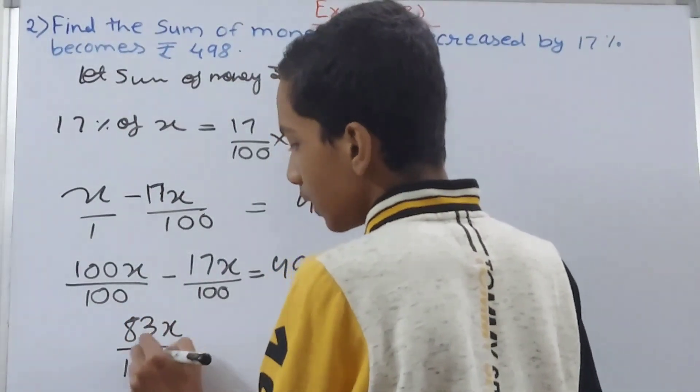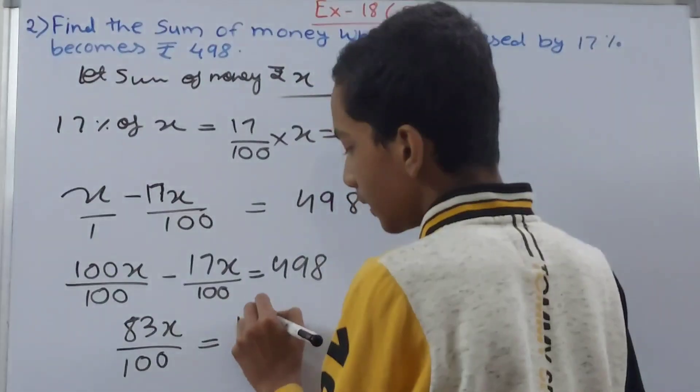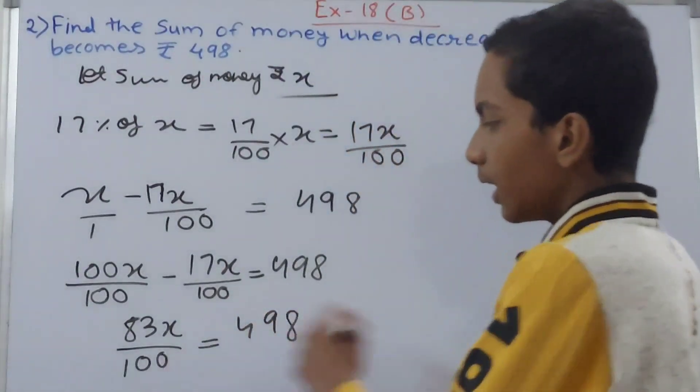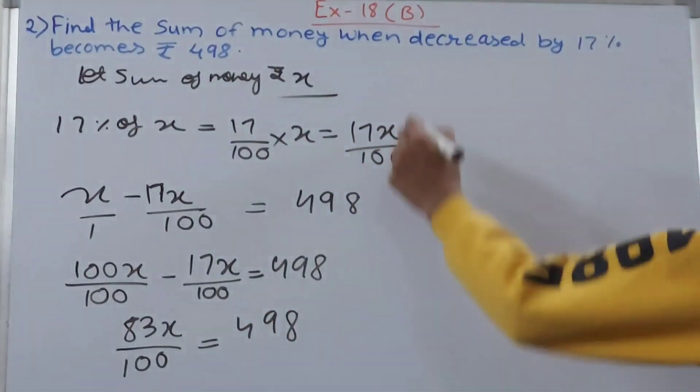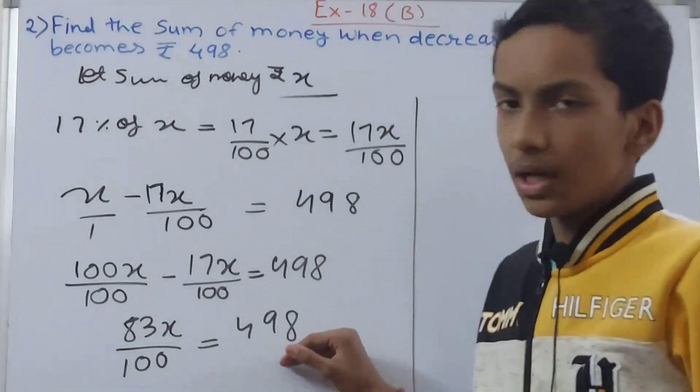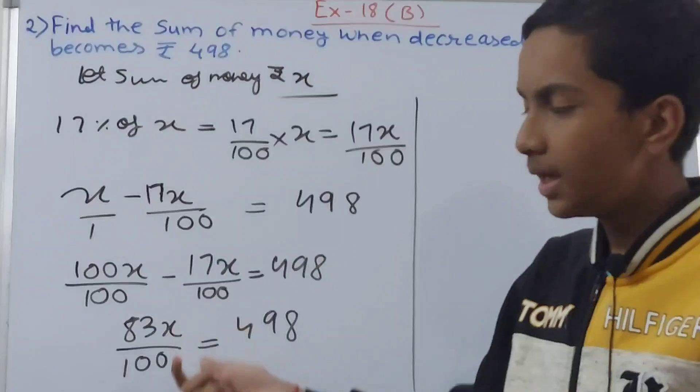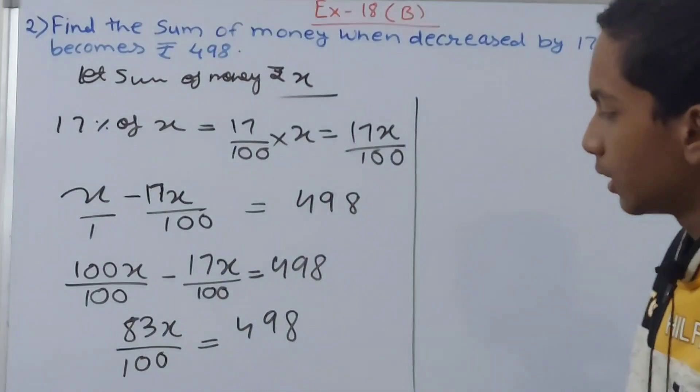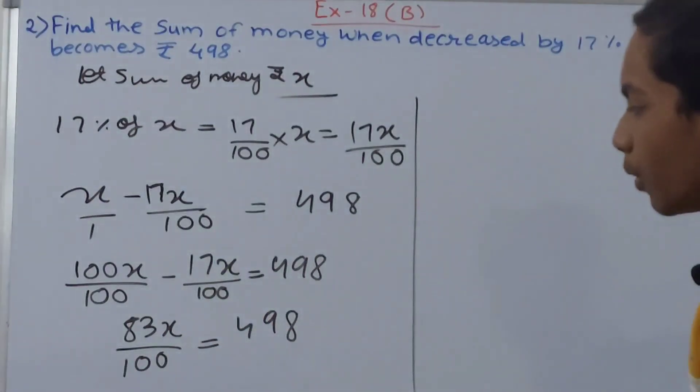83 upon 100 will come to the right-hand side. It will be reciprocated, so you will get 100 upon 83. So x equals 498 into 100 upon 83.